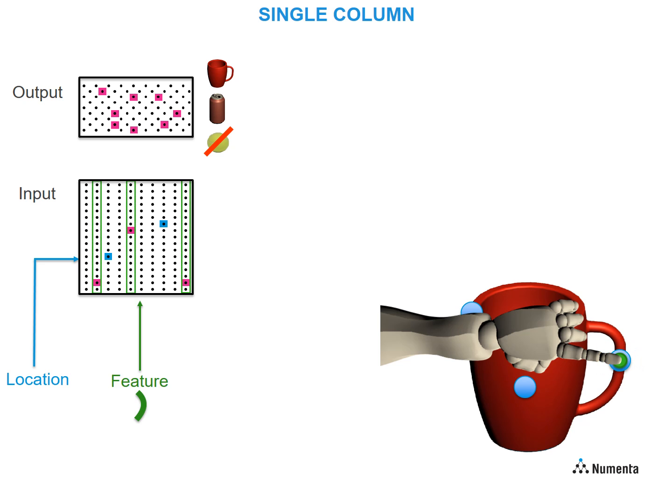At the third location, it goes through the same process, and now the output recognizes the cup, as shown by the unique representation at the output layer.